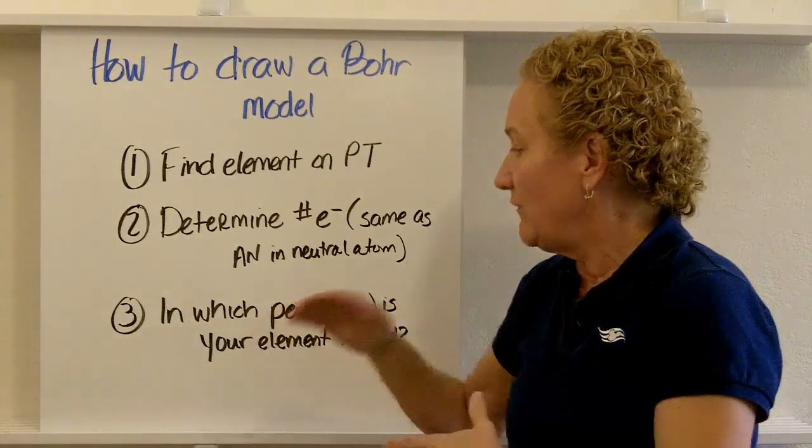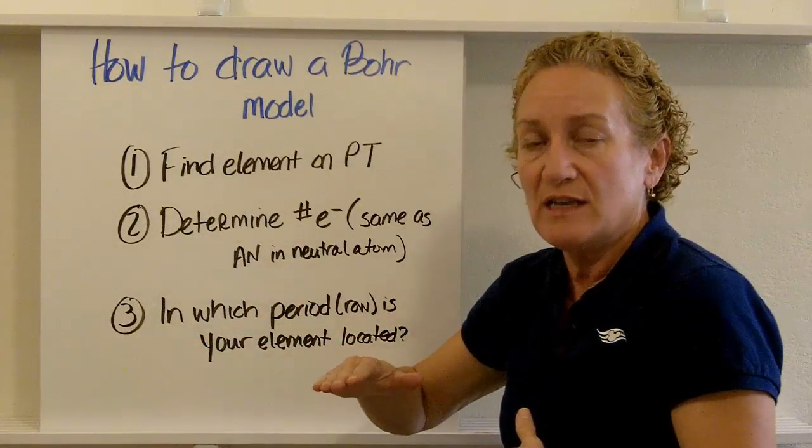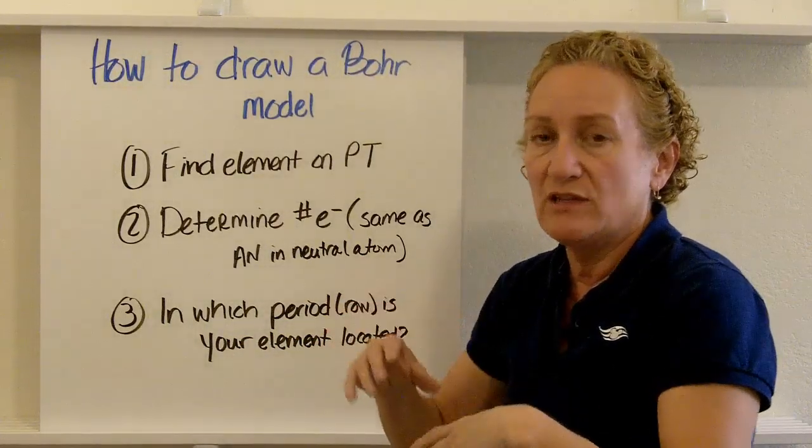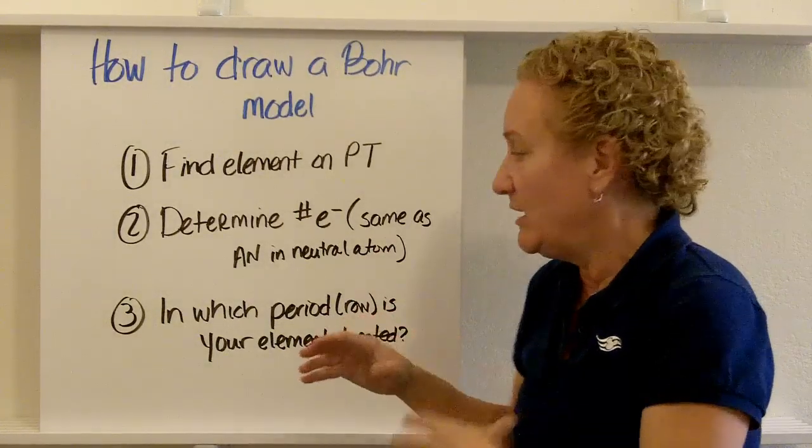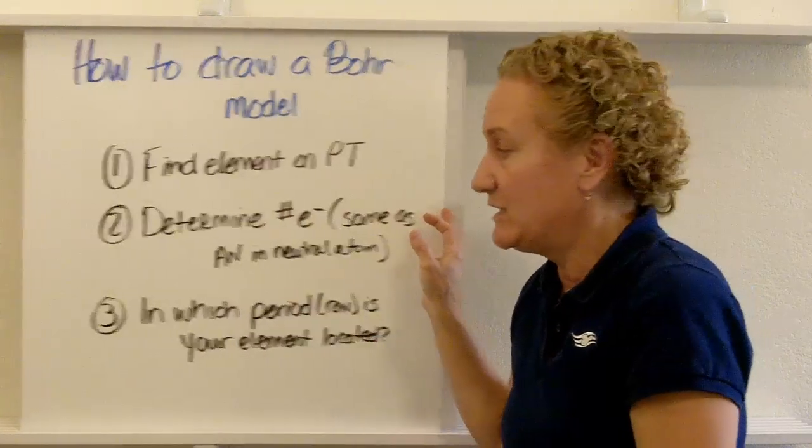Third, you're going to find what row your element is in. And that's going to tell you how many energy levels it uses. So if it's in row three, you're going to put in three energy levels. If it's in row one, you're going to put in one. If it's in row four, you're going to put in four, etc. So that's important stuff and you can get that off the periodic table. It makes things a lot easier for you.